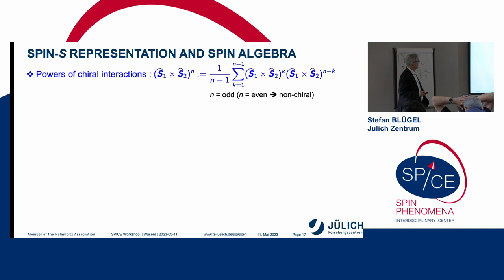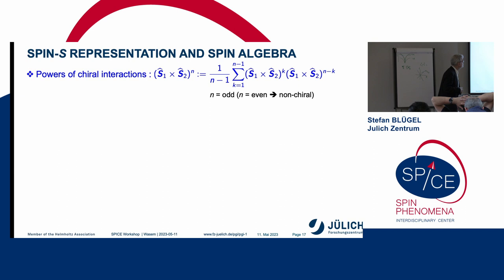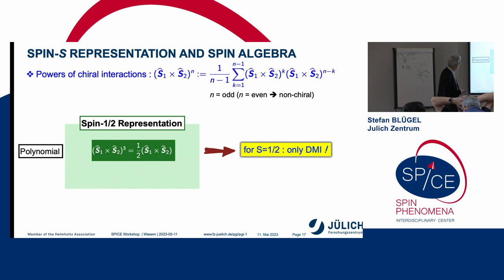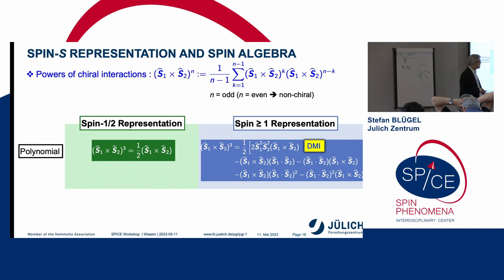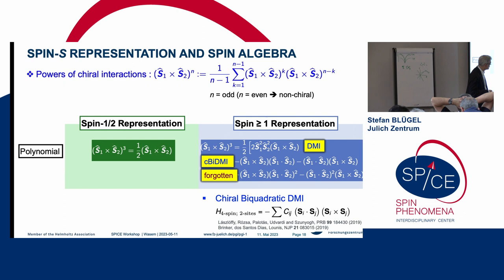The same you can do for the chiral interaction. Basically, the question of the power of the chiral interaction, S1 cross S2. And if this power is odd, it remains chiral. If the power is even, it becomes non-chiral. And then you see for the spin-1 representation, the third power is identical to the first power. So that means for spin-1/2, there is nothing else than DMI. But if you have a spin-1 system or spin-2 or spin-3/2 system, things are more complicated. You have the DMI term, the chiral bi-quadratic term, and another term. It's good to keep this algebra in mind.